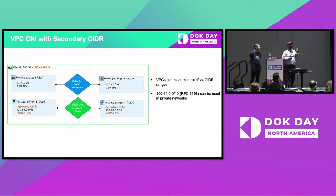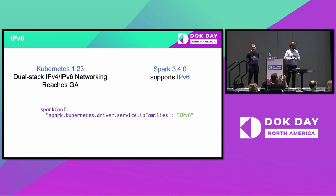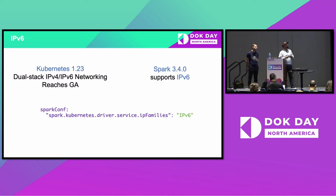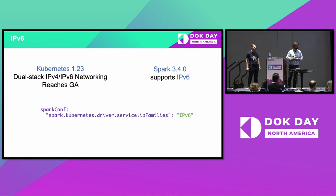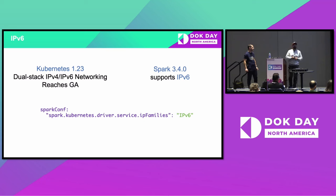In this architecture you can go up to 120,000 pods running within the same EKS cluster for large-scale workloads. Looking ahead, customers are moving toward IPv6 — Kubernetes from version 1.23 supports IPv6, and Spark 3.4.0 added IPv6 support as well. The configuration you apply at job submission time allows you to leverage IPv6 and avoid IP exhaustion, enabling a large number of pods within the same Kubernetes cluster.